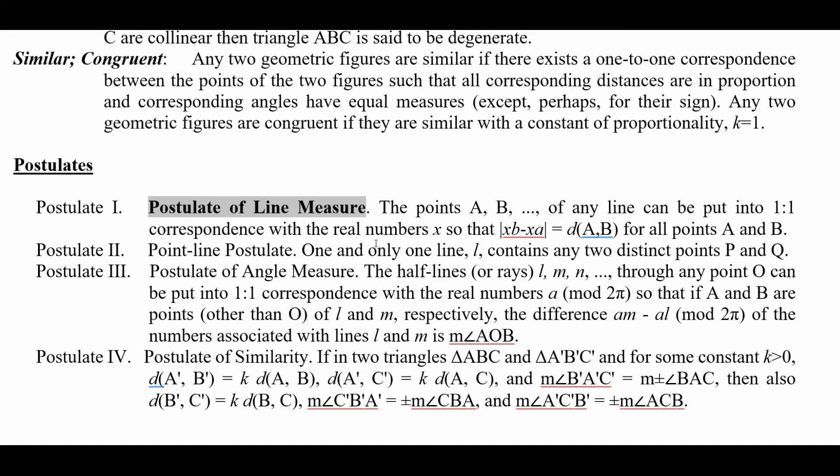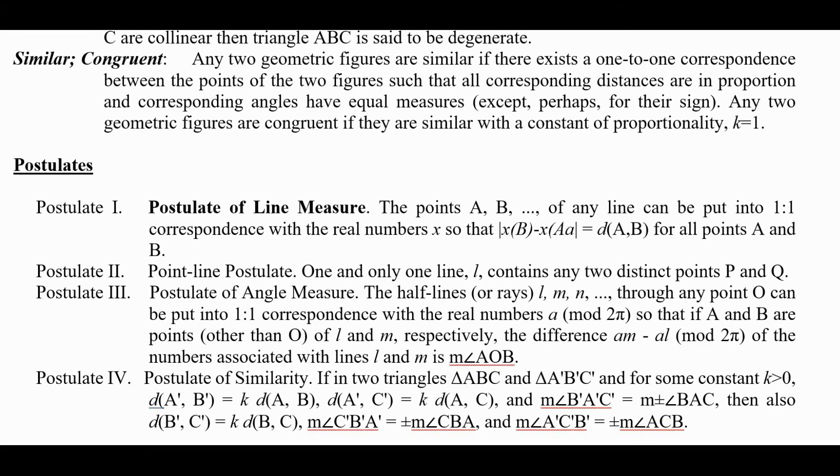so that x(B) minus x(A) is the distance from A to B. In other words, the correspondence is x which is a function, so this is x of B and this is x of A. It says if we take these coordinates the difference in them is the distance between them for all points A and B.